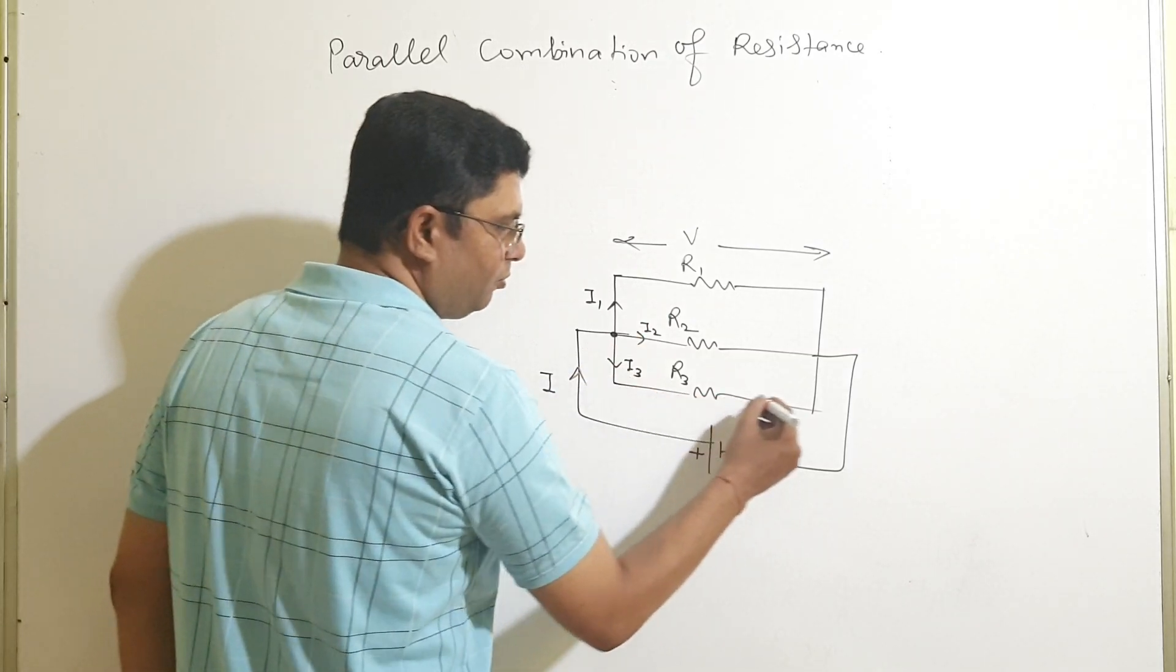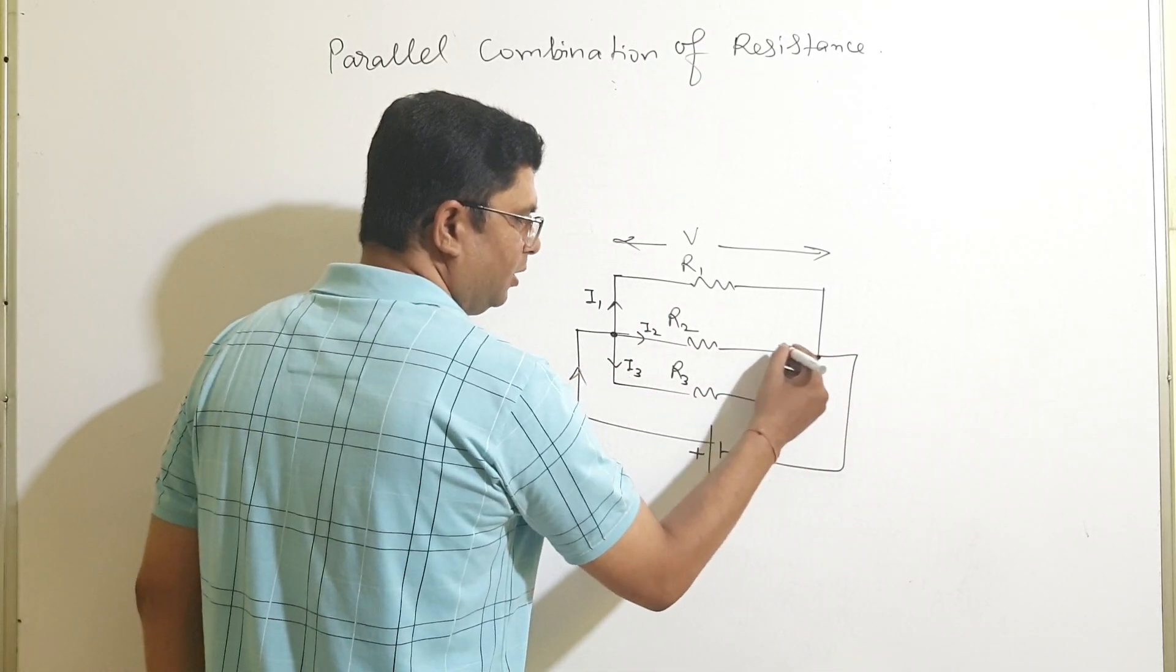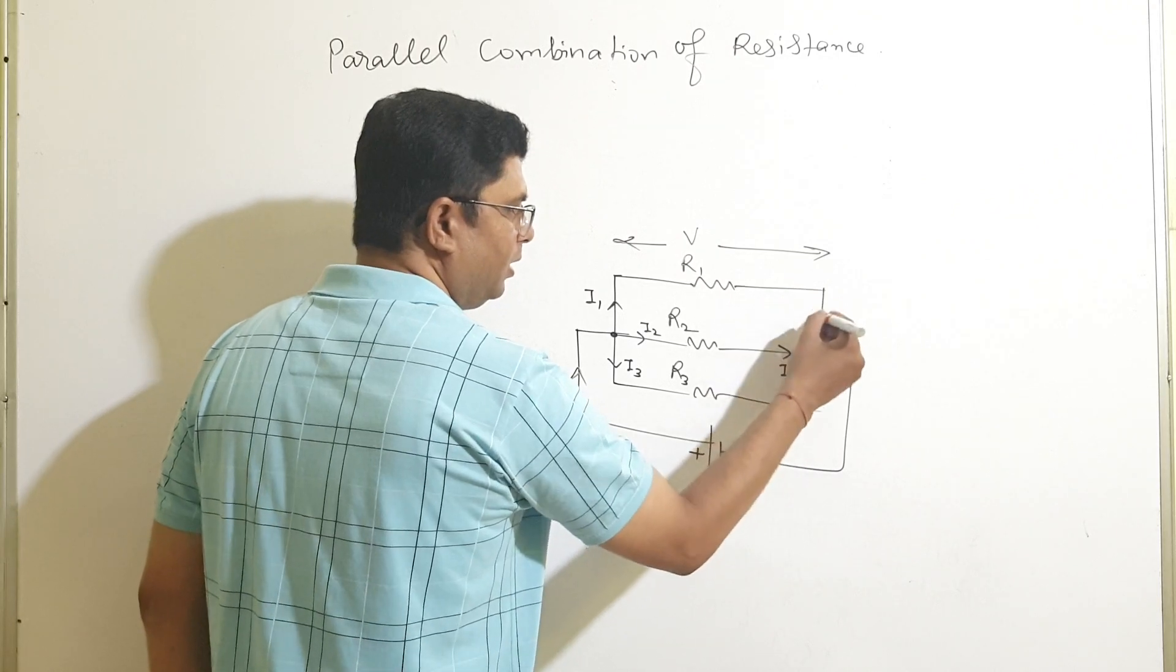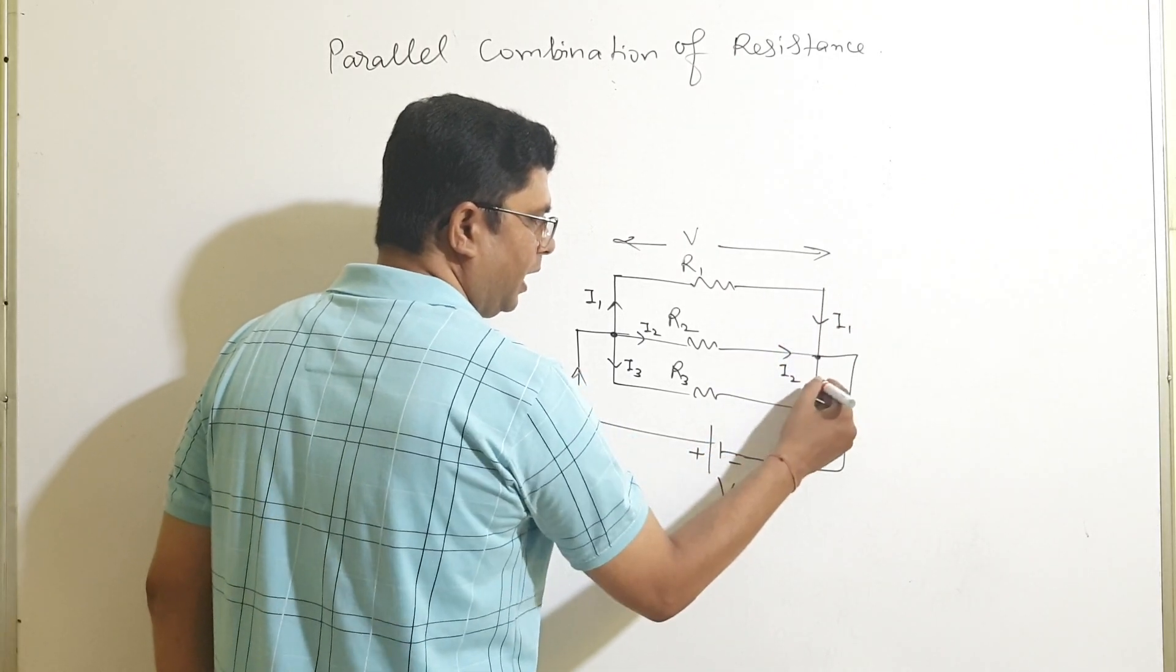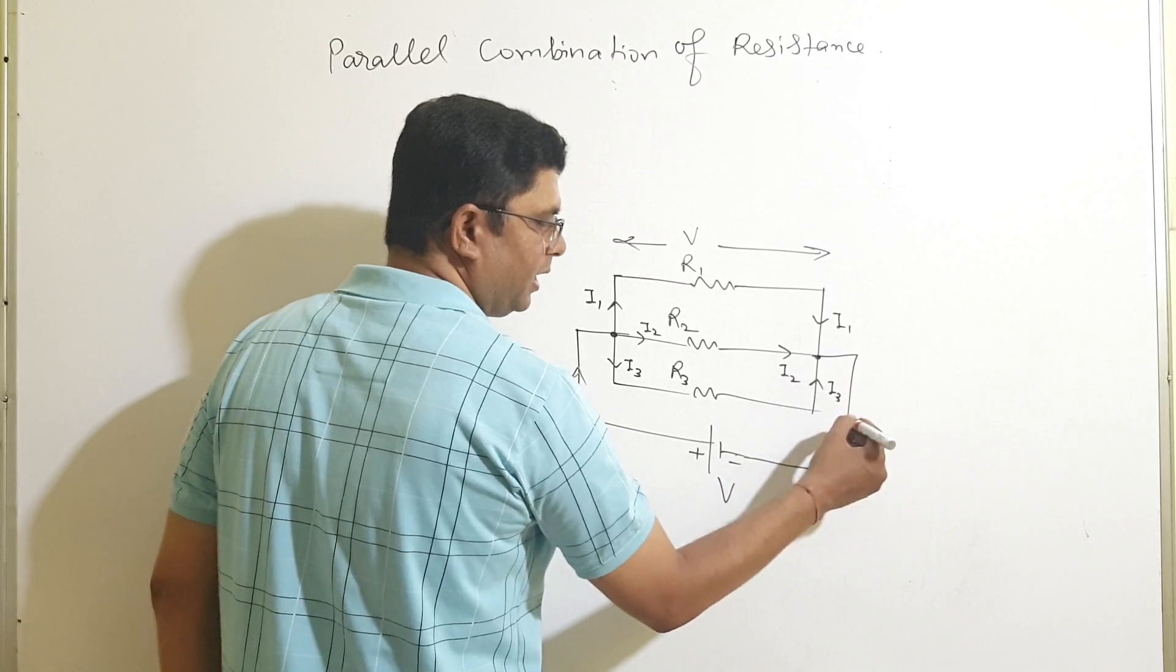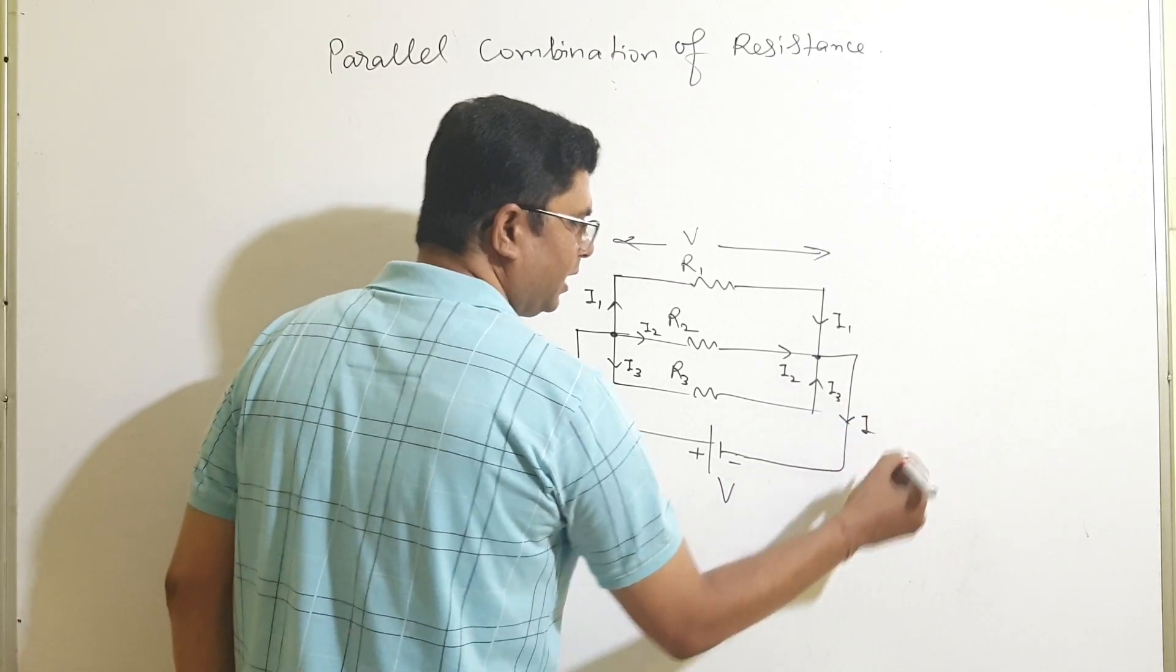This current will move to this junction. So I2 comes here, I1 and I3 will be here. There are 3 again connected and current is I.